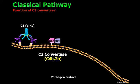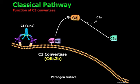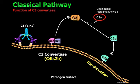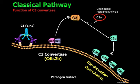The C3-convertase will be able to cleave several molecules of C3 found in plasma, generating C3a and C3b. C3a is a potent chemoattractant molecule. If C3b is close enough to the cell surface, it will bind covalently — this process is called C3b deposition. The C3-convertase will cleave many molecules of C3, leading to massive C3b deposition, which is important in opsonization. C3b promotes phagocytosis and is therefore an opsonin.